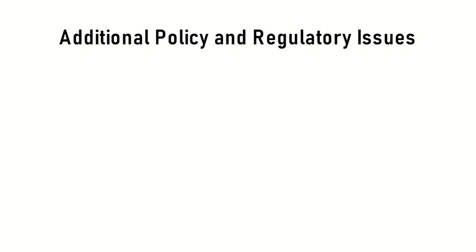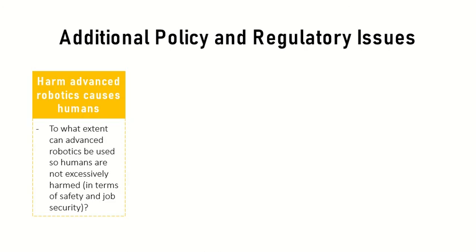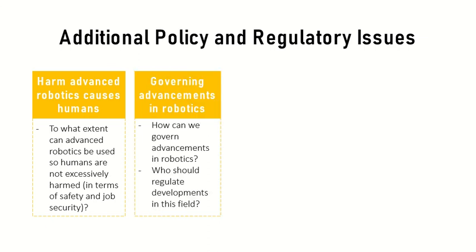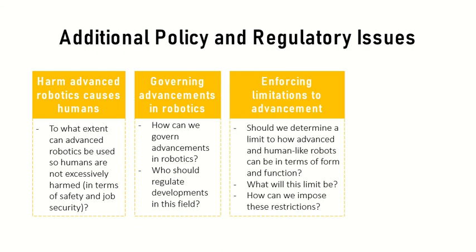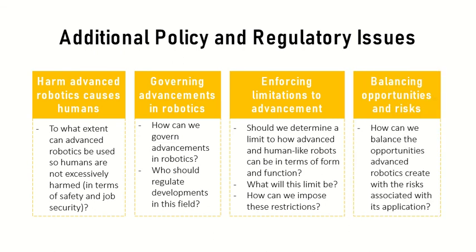Advanced robotics has also led to broader social and ethical implications, which lead to additional policy considerations: to what extent can advanced robotics be used so humans are not excessively harmed in terms of safety and job security? How can we govern advancements in robotics and who should regulate developments in this field? Thirdly, should we draw the line and determine a limit to how advanced and how human-like robots can be in terms of their form and function? What will this limit be and how can we impose such restrictions? Lastly, how can we balance the opportunities advanced robotics creates with the risks associated with its application?